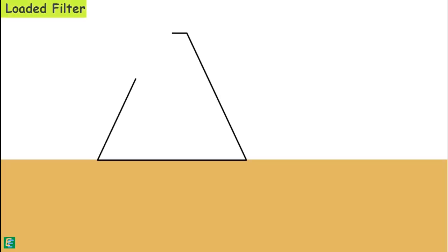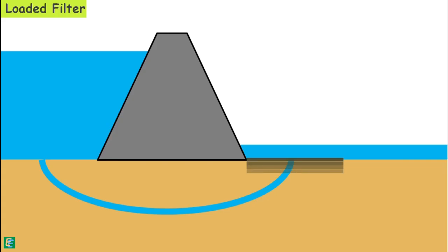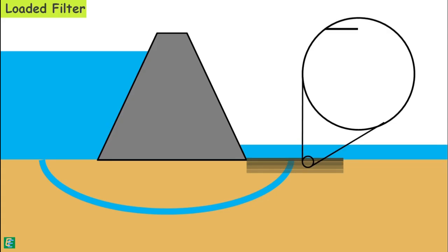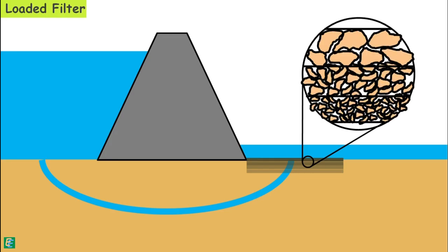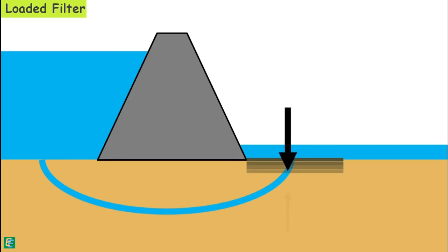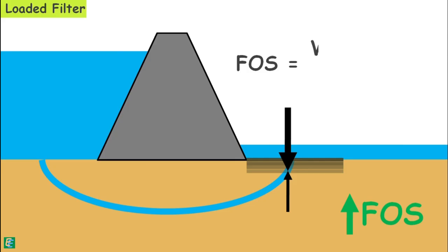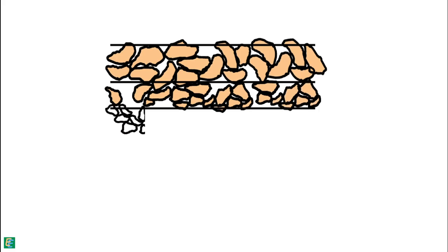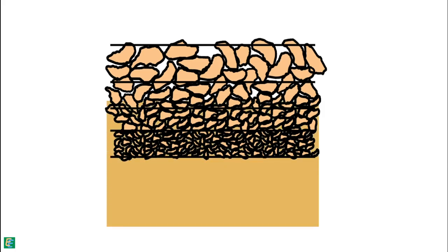To prevent piping failure, we may also provide a loaded filter. It is provided at the downstream from where the water emerges out. A loaded filter consists of pervious material such as graded sand and gravels. It increases the downward force to counter the upward seepage force at the point where water emerges from the soil, thus increasing the factor of safety against piping. The factor of safety is given as the weight of soil plus the weight of the filter divided by the upward seepage force. Filters are designed to be more permeable than the soil they protect, yet their particles are not so large that fine soil particles can move through the filter voids.